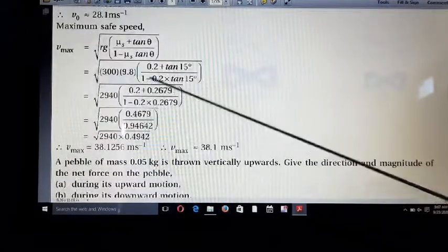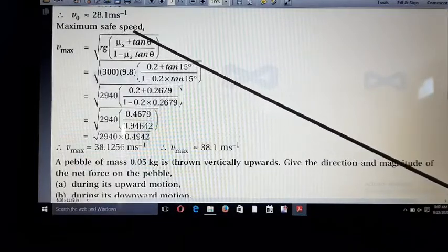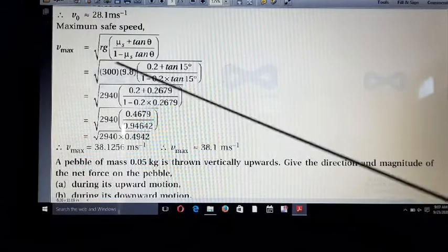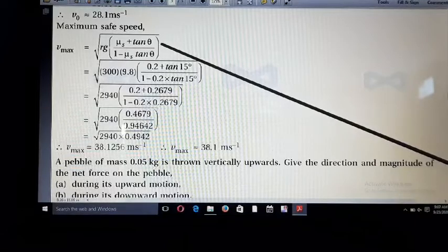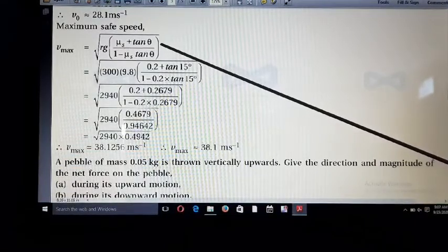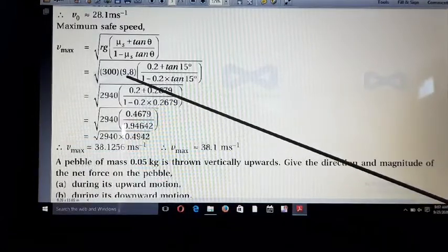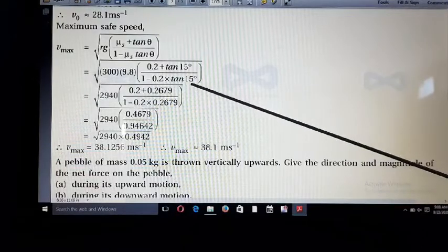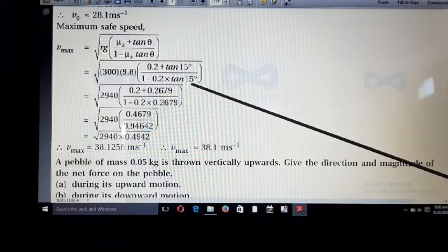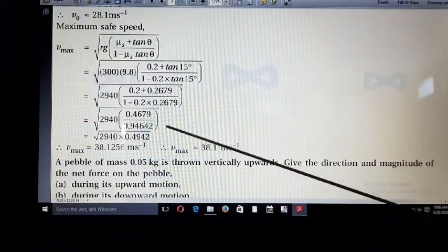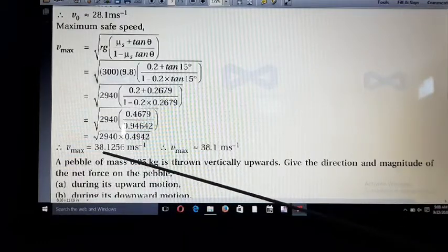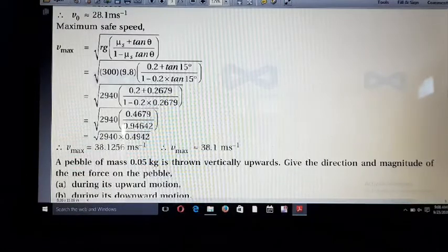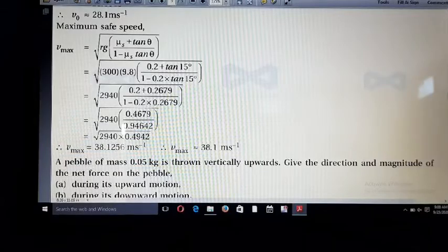And friends, last video we solved maximum safe speed formula. V_max = sqrt(Rg·(μs + tan θ)/(1 - μs·tan θ)). Now we have all values available. Substituting these values in this equation: R = 300, g = 9.8, μs = 0.2, tan 50° upon 1 minus 0.2 cross tan 50°. Calculate carefully. After calculation, we get answer V_max equals 38.1256 means V_max approximately 38.1 meter per second. This is the maximum safe speed you can drive.